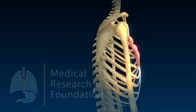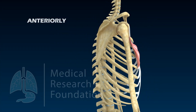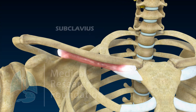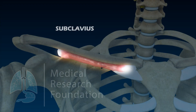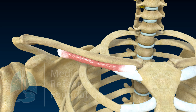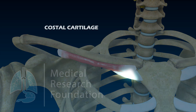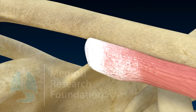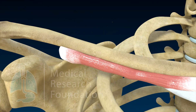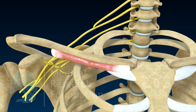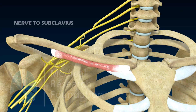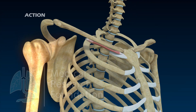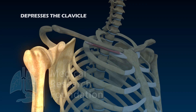Pectoralis minor stabilizes the scapula by drawing it anteriorly against the thoracic wall. Subclavius originates from the upper surface of the first costal cartilage. Insertion takes place at the middle third of the inferior surface of the clavicle, known as the subclavian groove. It is supplied by the nerve to subclavius from the upper trunk of the brachial plexus. Its action is to depress the clavicle.